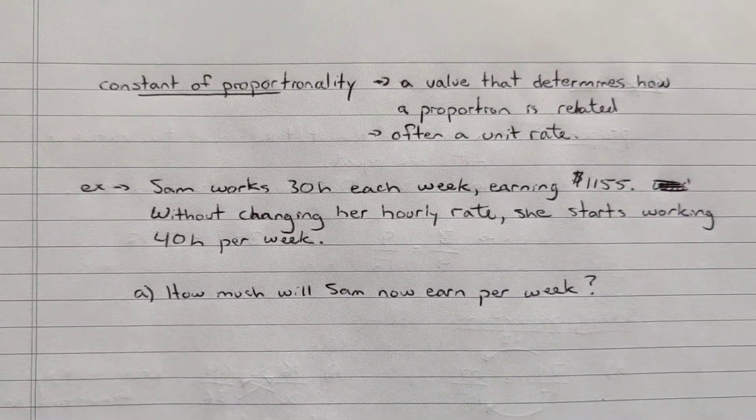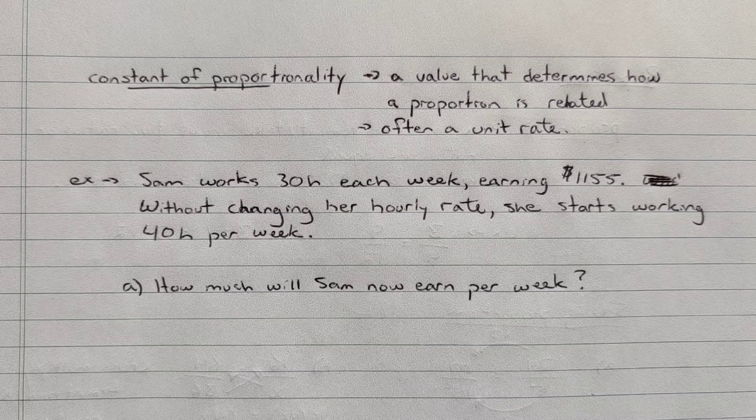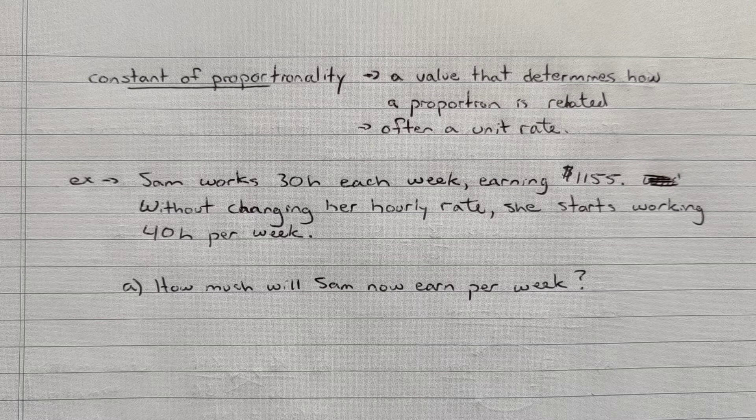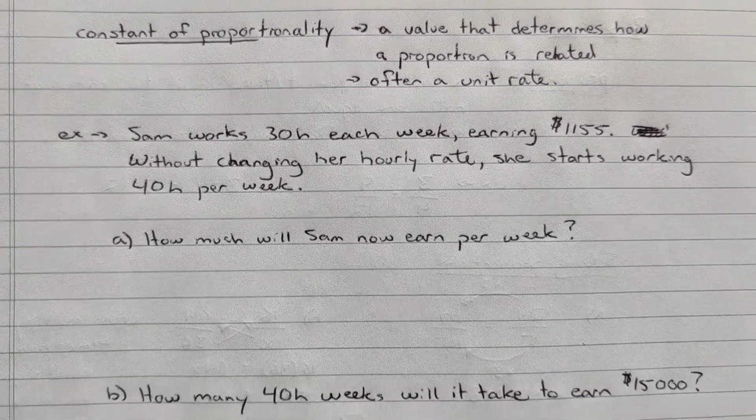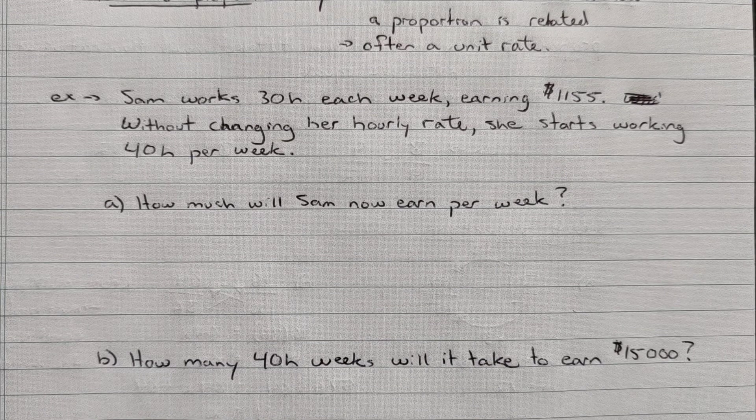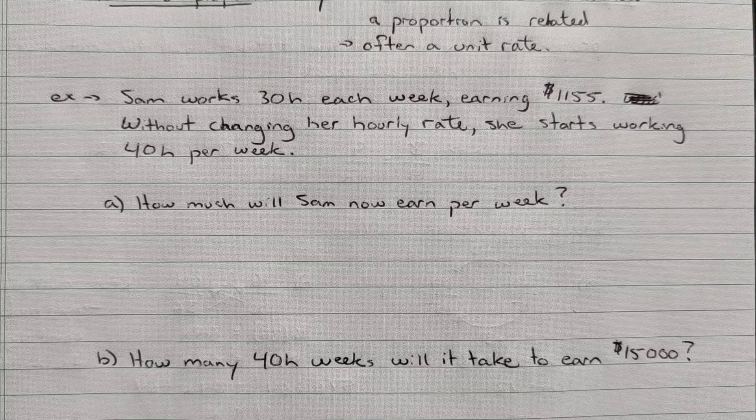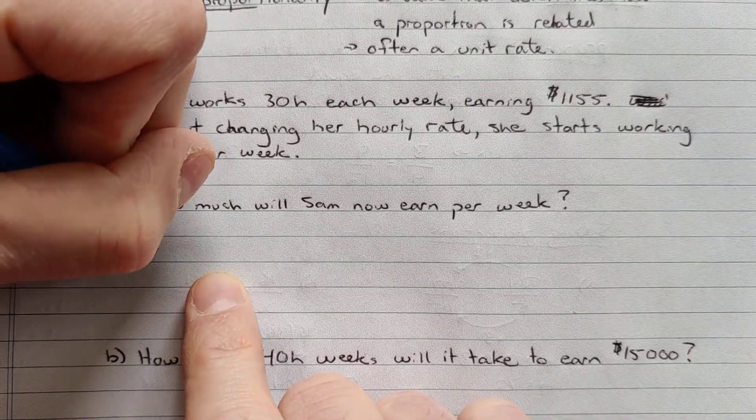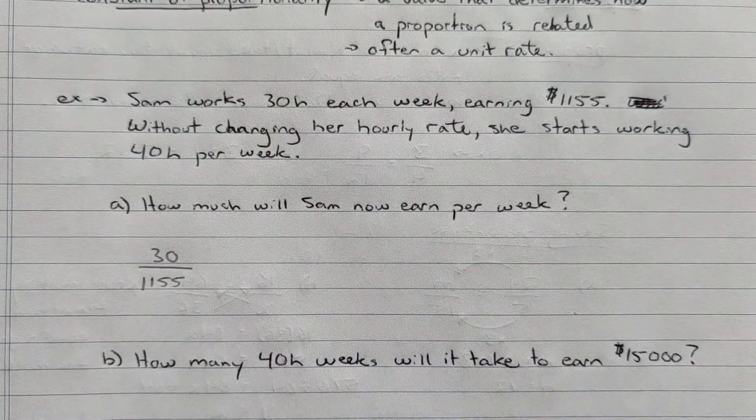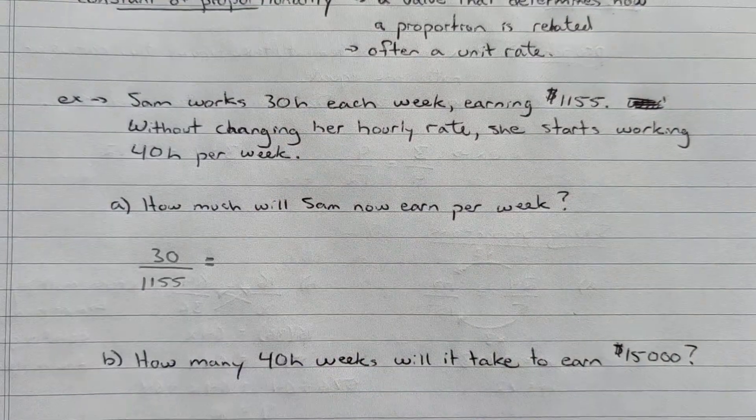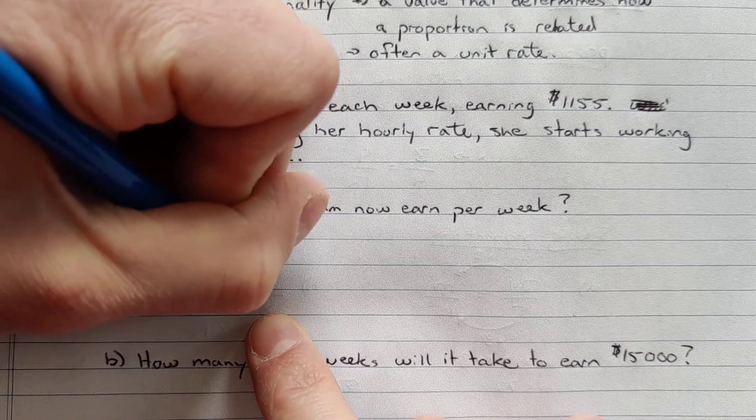One more thing with this one, the constant of proportionality. So a little complex terminology. This is just, in general, it's the value that compares the proportions. It's generally a unit rate. So let's do a little question here to practice a little more with proportions, and then this constant of proportionality. So Sam works 30 hours each week earning $1,155. Without changing her hourly rate, she starts working 40 hours per week. How much will she now earn per week? Well, originally, she was working 30 hours and making $1,155. Now, she's working 40 hours, and we want to know how much she makes. So we'll use P for pay.